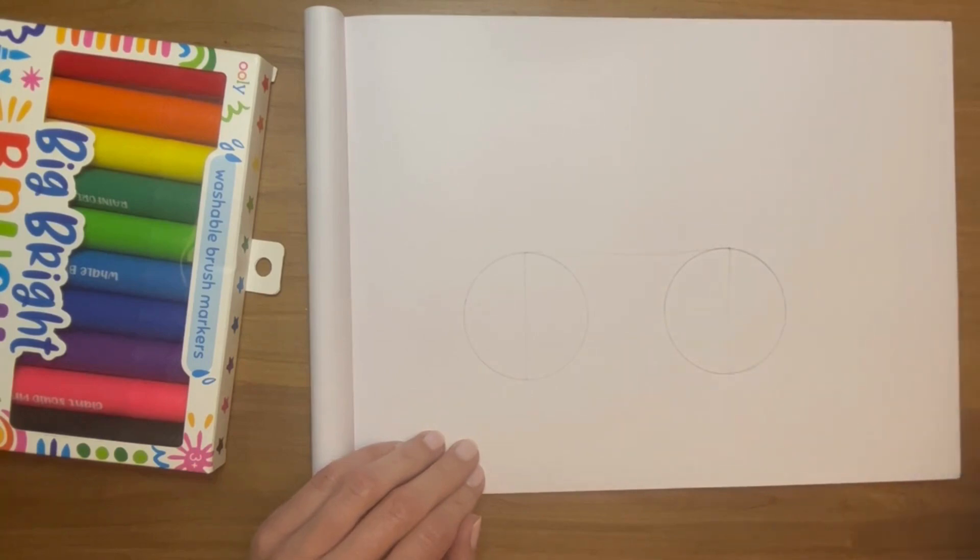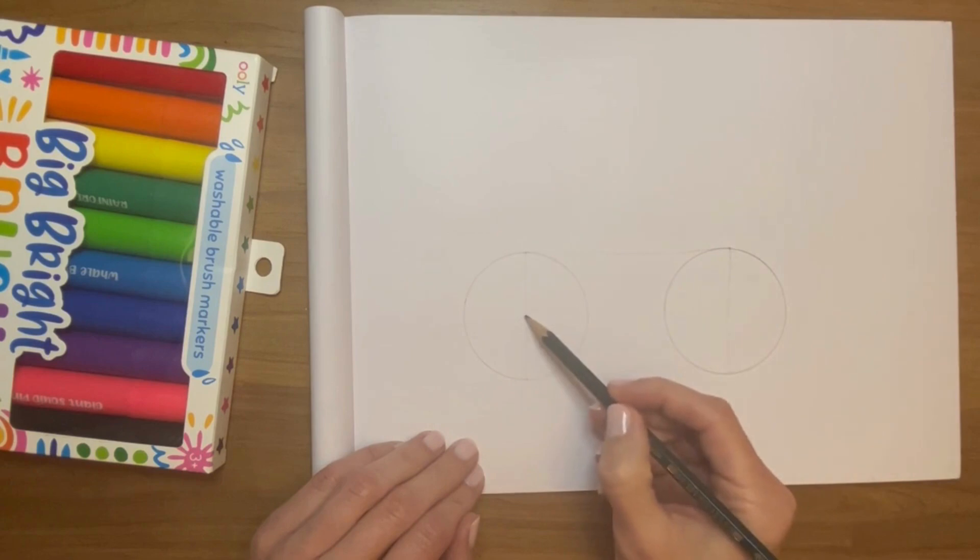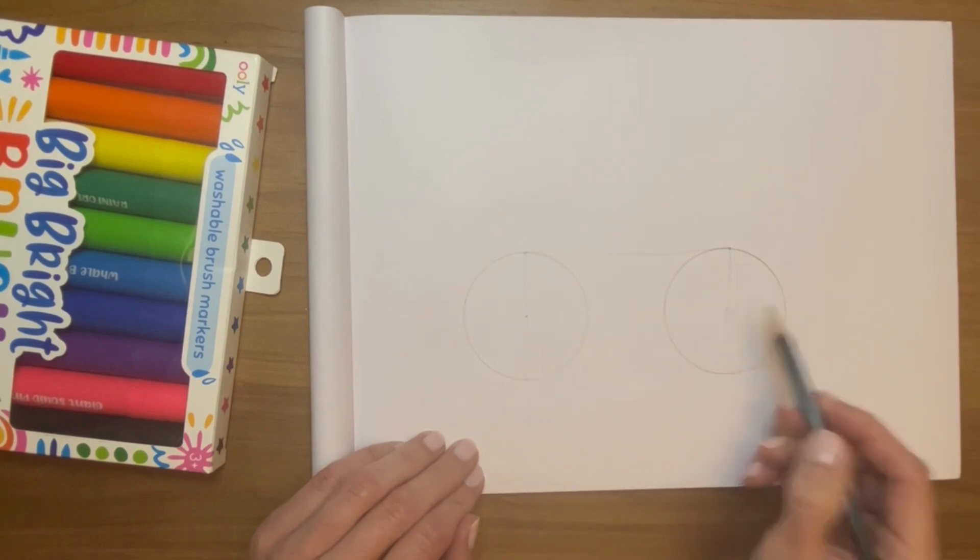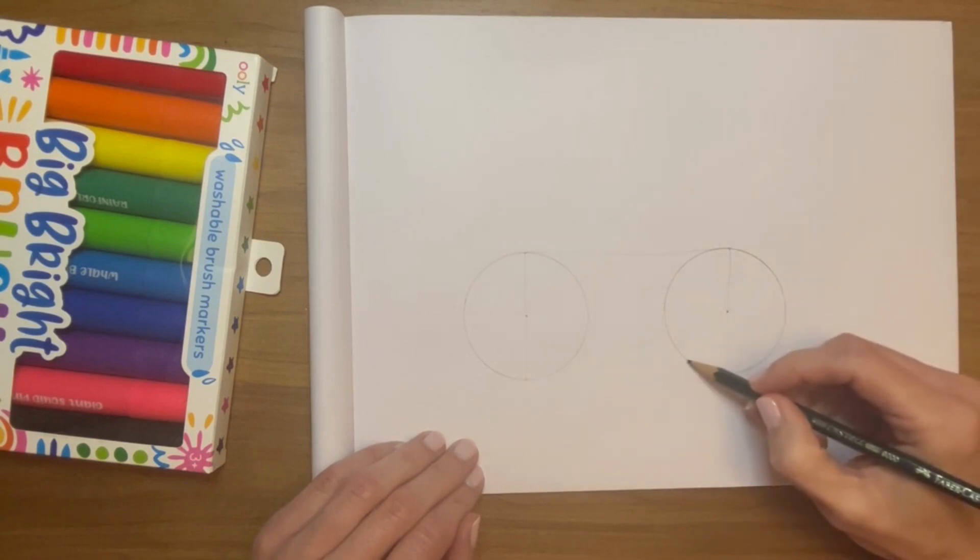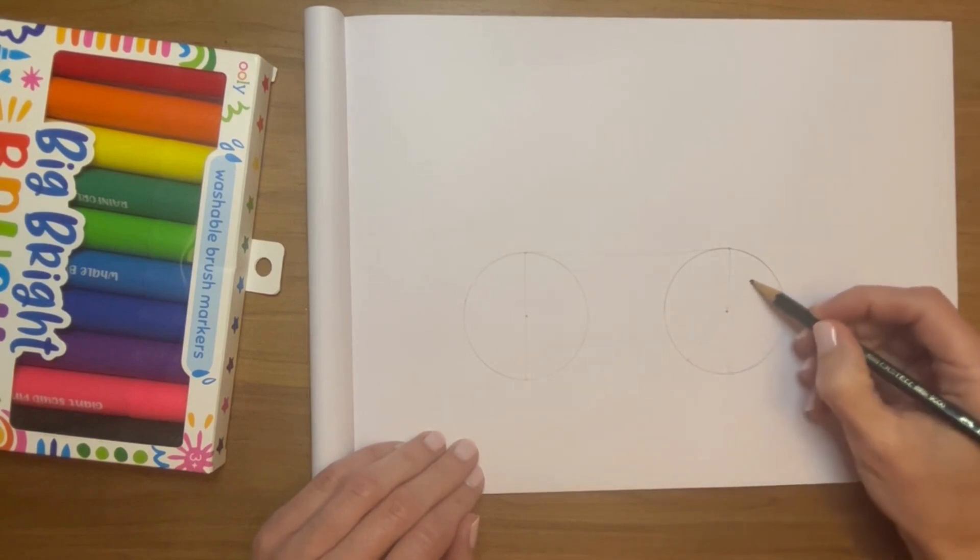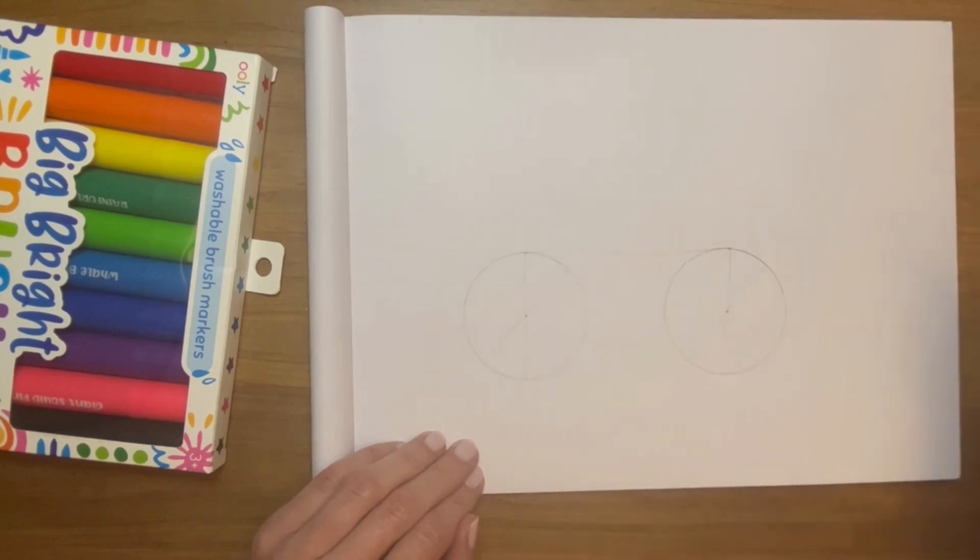Again, if you feel more comfortable with a ruler, just use a ruler. I'm going to find about the middle of both lines and put a dot over there. I'm going to keep drawing the wheel here.